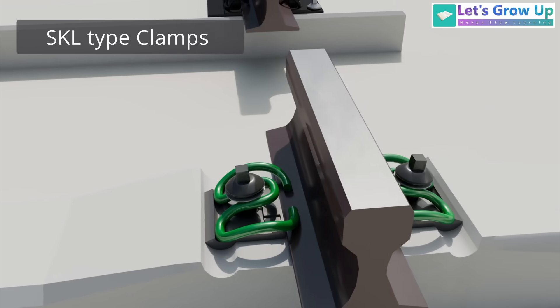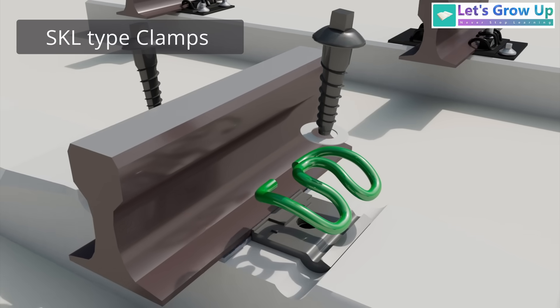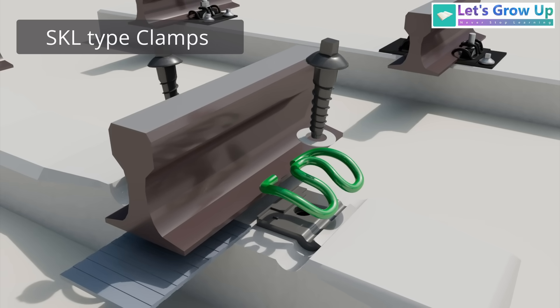SKL type clips, more accurately termed tension clamps, are the hallmark of the Vossloh system. They represent a highly successful range of bolted, non-captive rail fasteners, known for their exceptional elasticity and suitability for heavy haul, high speed, and urban transport lines.